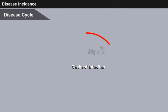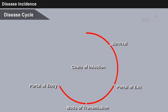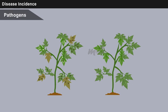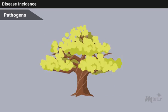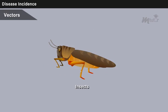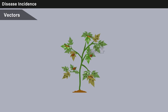Disease cycle is the chain of events involved in disease development, including the stages of development of the pathogen and the effect of the disease on the host. Pathogens are transmitted by many factors, which include biotic, abiotic, and environmental factors. Vectors are active agents such as insects, mites, nematodes, and other animals that carry and transmit a pathogen — that is, inoculum — to a plant.